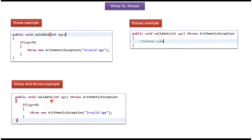Here you can see the example of throw and throws together. If age is less than 0, using the throw keyword I am throwing an arithmetic exception. Also, I am mentioning this method may throw an arithmetic exception using the throws keyword. And this is about the difference between throw and throws. Thanks for watching.